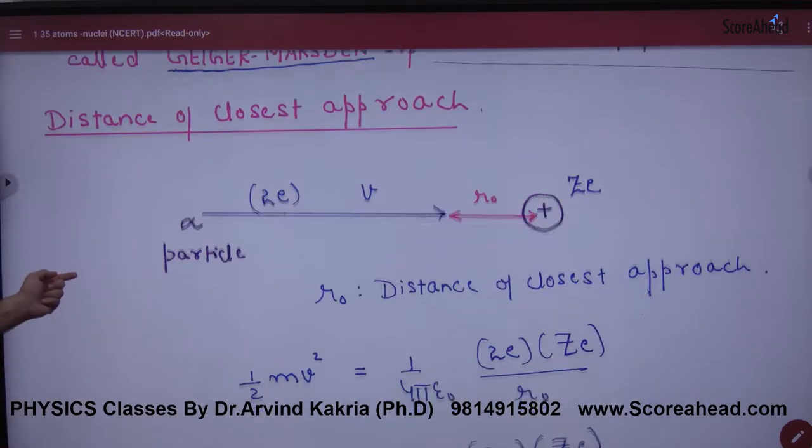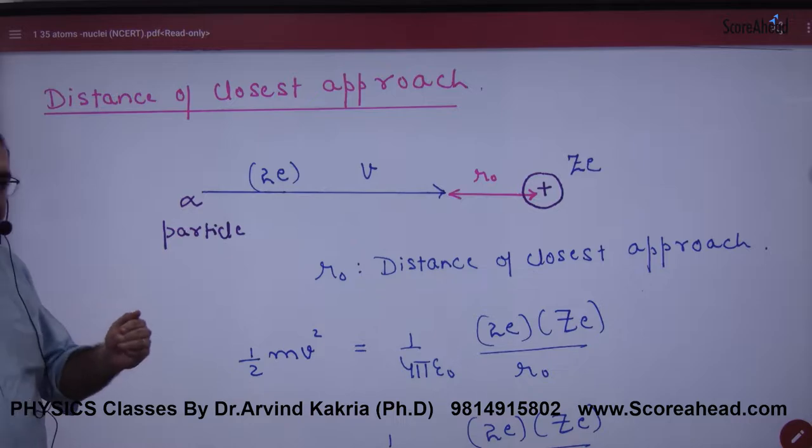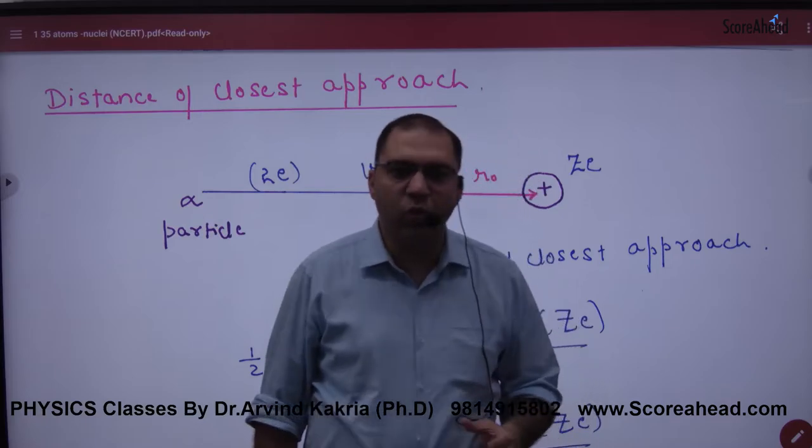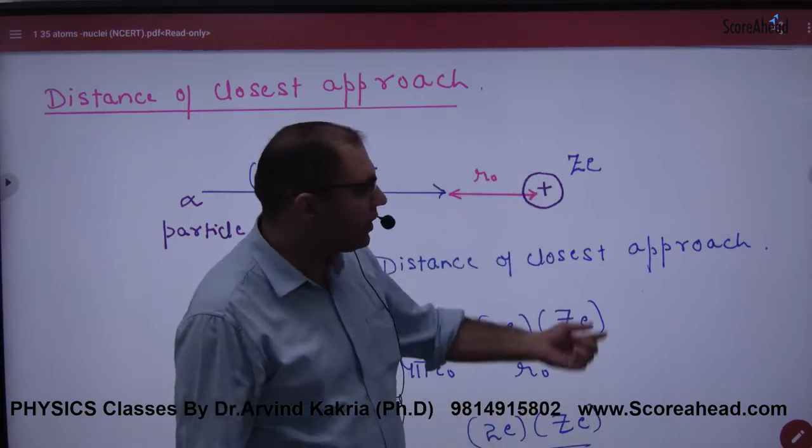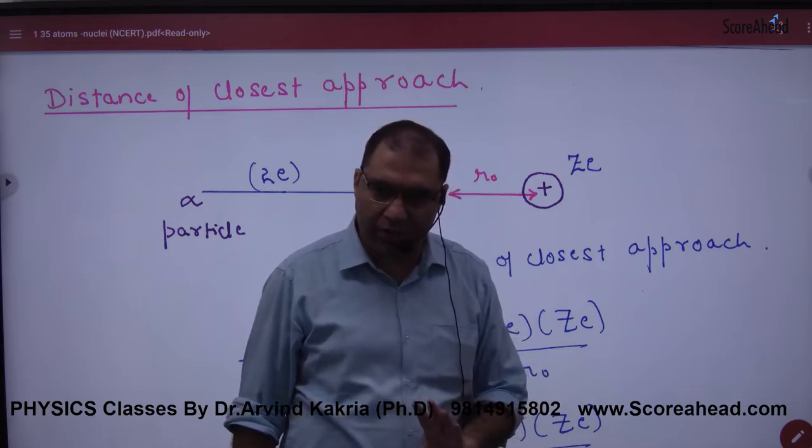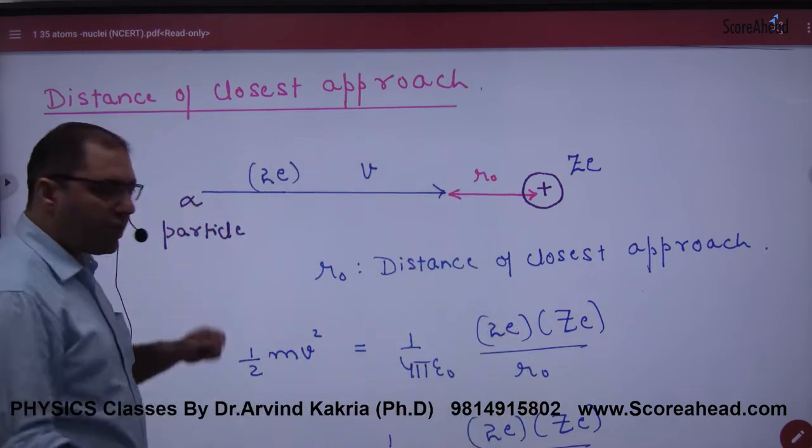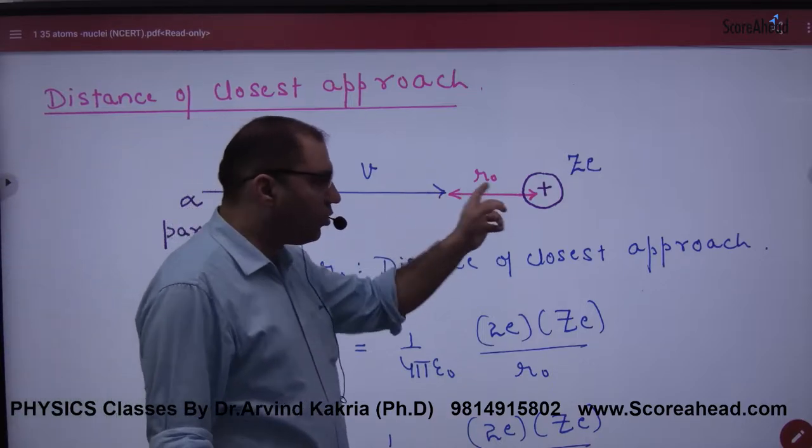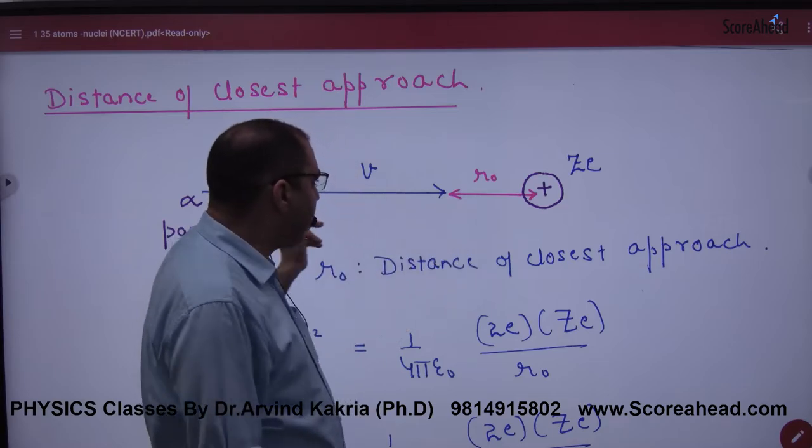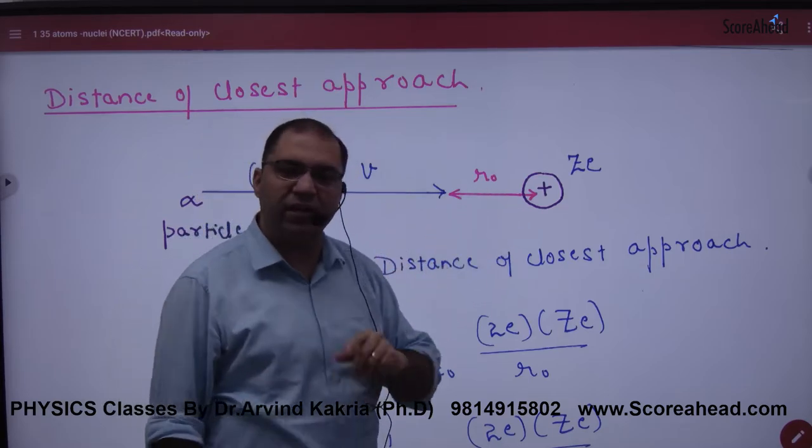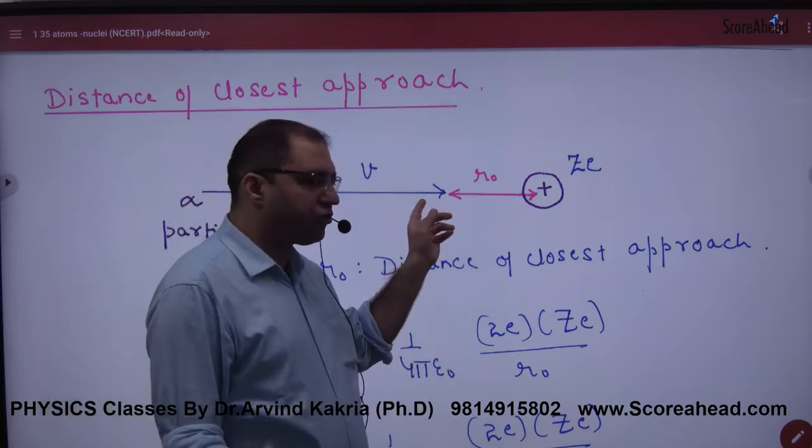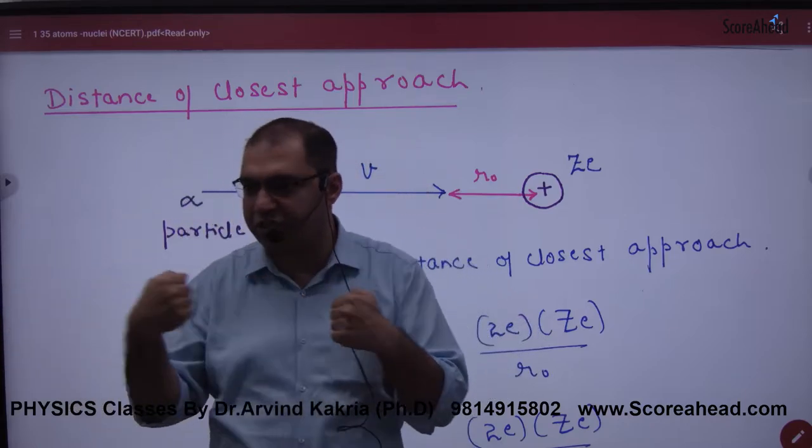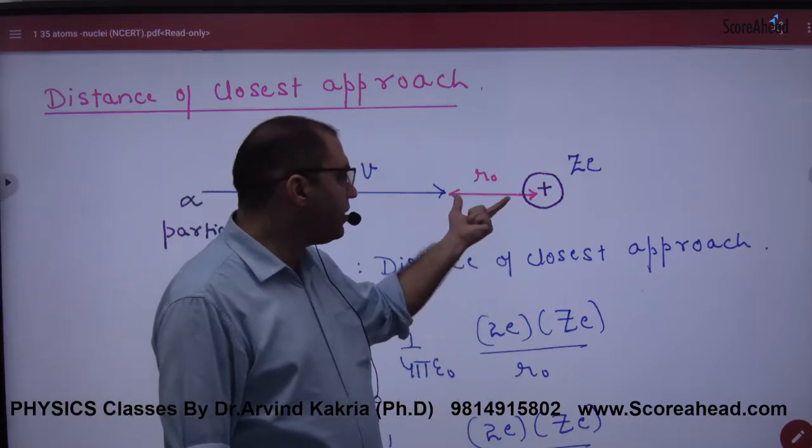When Rutherford discovered the nucleus, he told the distance of the closest approach. Let's assume that you have a nucleus. The atomic number of the nucleus is Z. So the charge is ZE, the charge of the protons. The charge of the alpha particle is 2E, two times the proton charge. So when the alpha particle comes, it tries to head-on collide but doesn't actually collide because they are both positively charged. Positively charged particles repel, and it goes down a little further without touching.